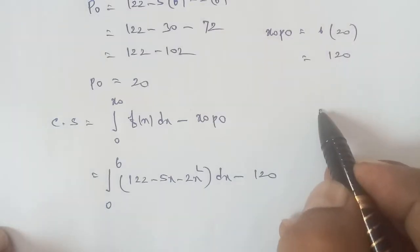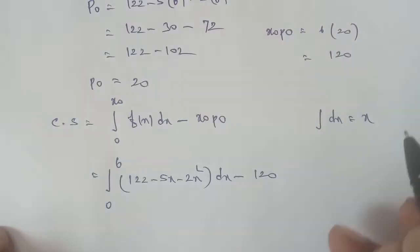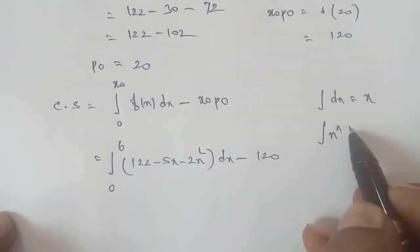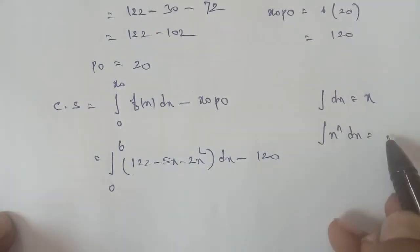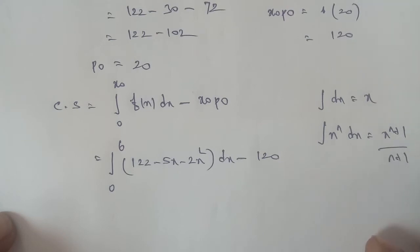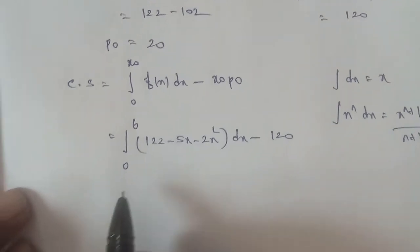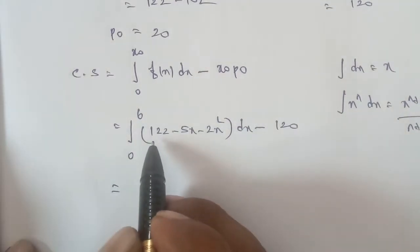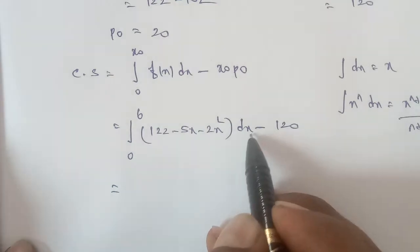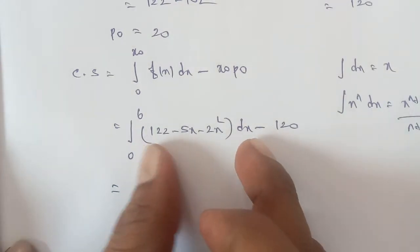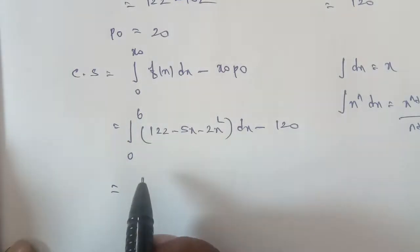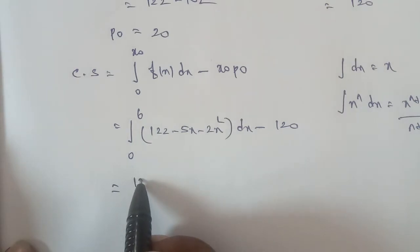The integration rules to apply: the integral of dx equals x, and the integral of x to the power n dx equals x to the power (n+1) divided by (n+1). For the constant term 122, since it is a constant, the integral of 122 dx equals 122x.